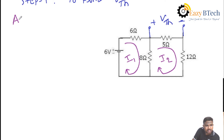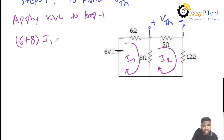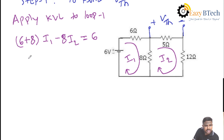To find I1 and I2, apply mesh analysis. Apply KVL to loop 1. In the first loop, I1 is passing through 6 and 8 ohms: 6 plus 8 into I1. The 8 ohm resistor belongs to the second loop also — it is the mutual element. I1 and I2 currents pass through 8 in reverse direction, so the drop with respect to I2 is minus 8 into I2, equal to the source value: minus 2 plus, giving positive 6. Arranging the terms: 14I1 minus 8I2 equal to 6. This is equation 1.